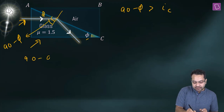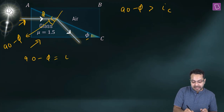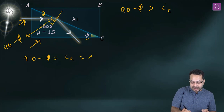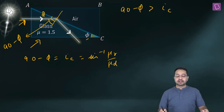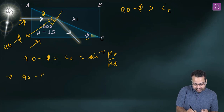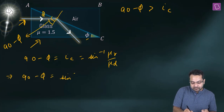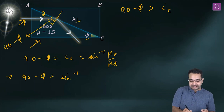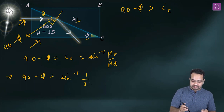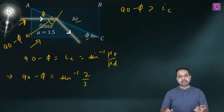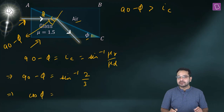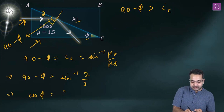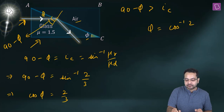Setting 90 − φ = ic = sine⁻¹(μ_R / μ_D) = sine⁻¹(1 / (3/2)) = sine⁻¹(2/3). Taking sine on both sides: sine(90 − φ) = cos φ = 2/3. Therefore φ = cos⁻¹(2/3).